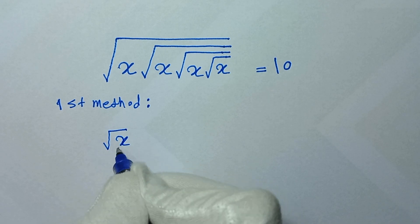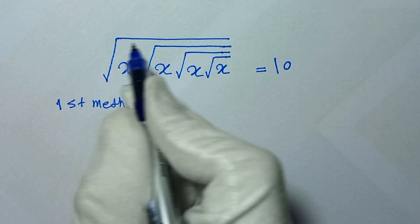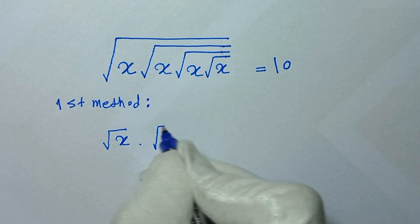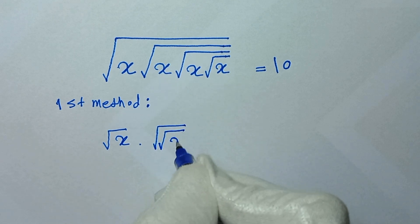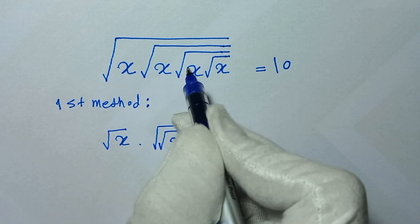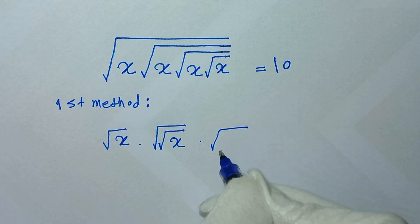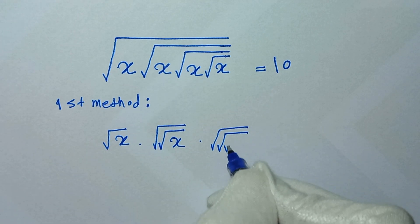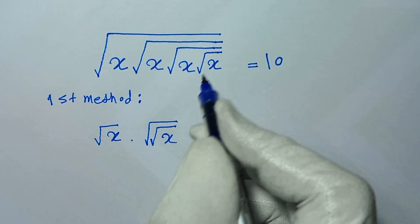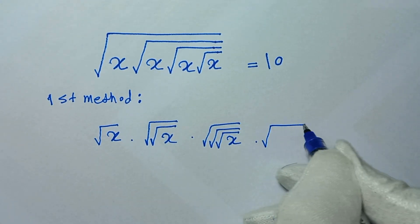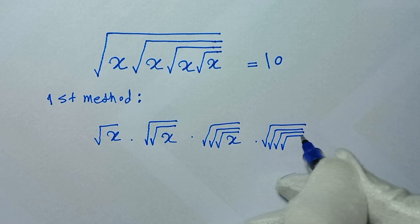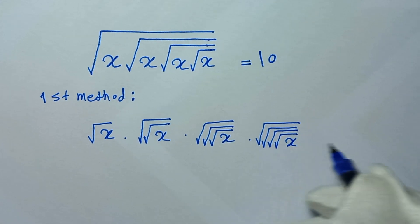For the first method, we write this as square root of x, times square root of square root of x, times square root of square root of square root of x, and times square root of square root of square root of square root of x equals 10.